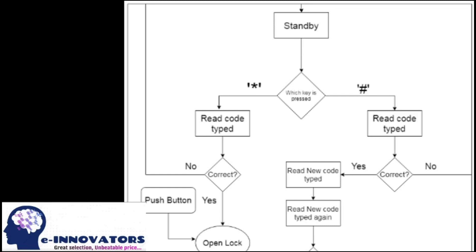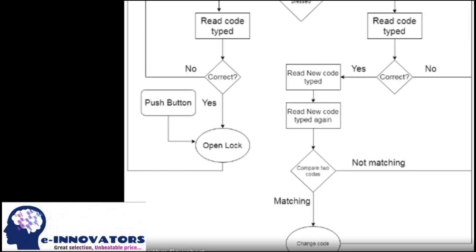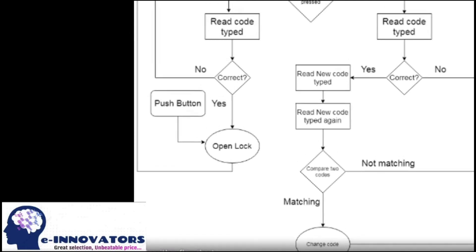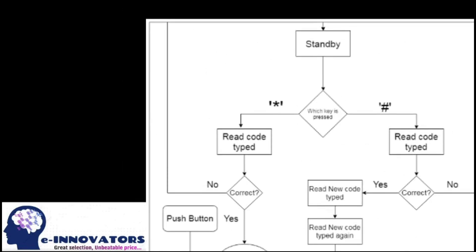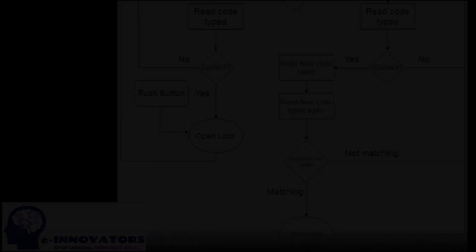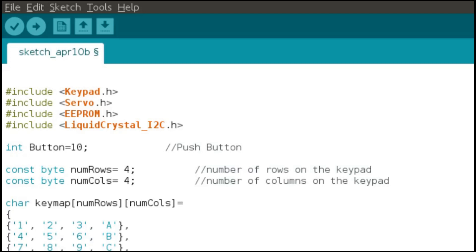If you press the hash key (#), it will ask for the code; if it is correct it will ask the user to type a new password and retype the new password, then compare both passwords. For the programming, we have to include four libraries: keypad.h, servo.h, eeprom.h, and liquidcrystal_i2c.h.